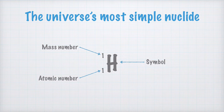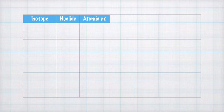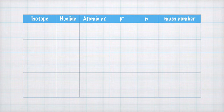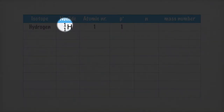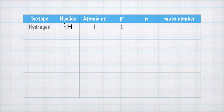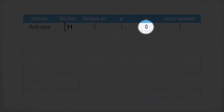How many protons and neutrons are there in this nuclide? We'll make a big table. In the head, we write isotope, nuclide, atomic number, number of protons and neutrons, and then finally the mass number. Let's start with hydrogen. Hydrogen has the atomic number 1, and thus also 1 proton. The mass number is 1, which means that there are no neutrons at all in this nuclide. The mass number equals the number of protons plus the number of neutrons.